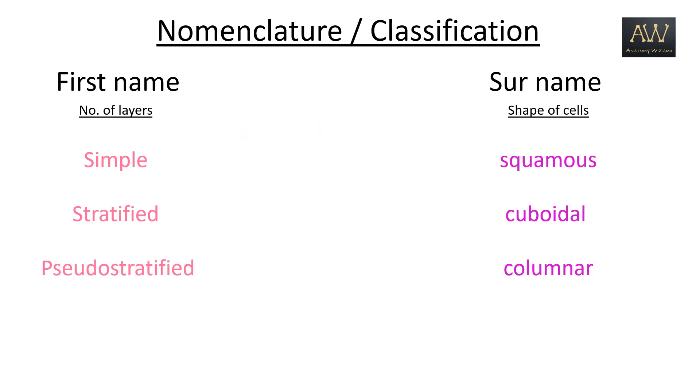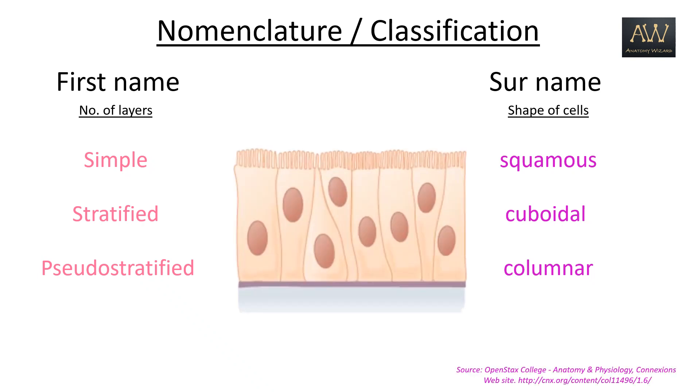The next type of epithelium is known as pseudo-stratified epithelium, in which there is actually only a single layer of cells, all of which are in contact with the basement membrane but have variable heights, thereby giving an impression of being in multiple layers.